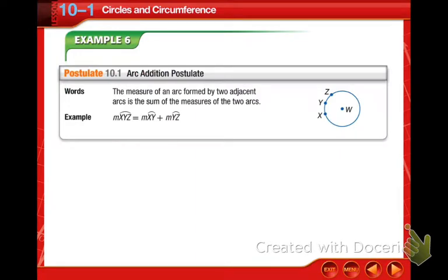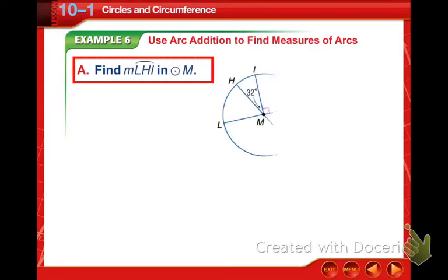Next one. Next little postulate. The measure of an arc formed by two adjacent arcs is the sum of the measures of the two arcs. Should be pretty common knowledge on that one. Here we need to find the measure of arc LHI. So the arc we're looking to find is this guy right here. And based on the fact that that's 32 degree angle and it makes up or uses that the same line as IM and LM, which are next to that other 90 degree angle, means our angle here is also 90 degrees.